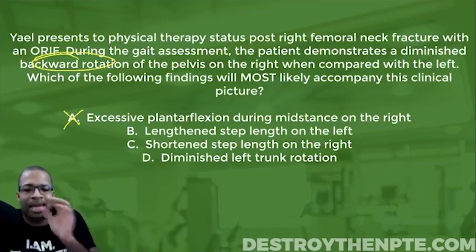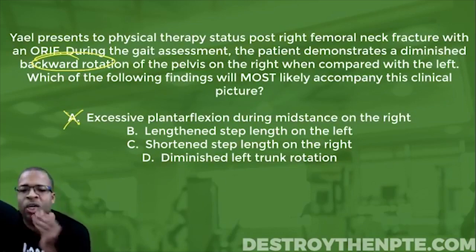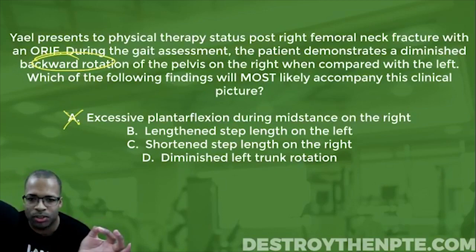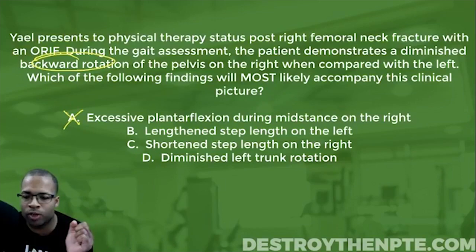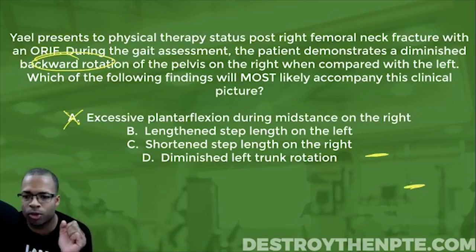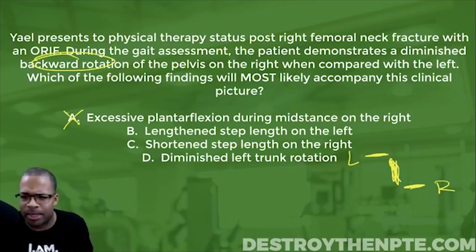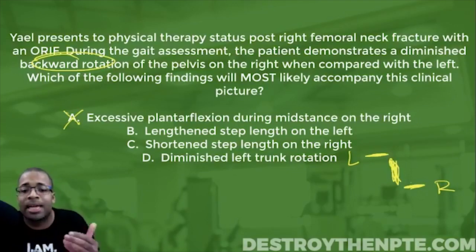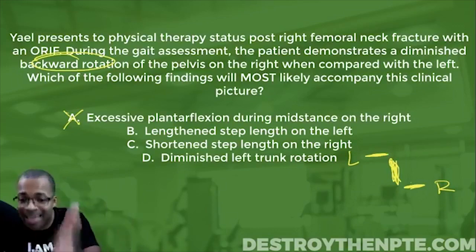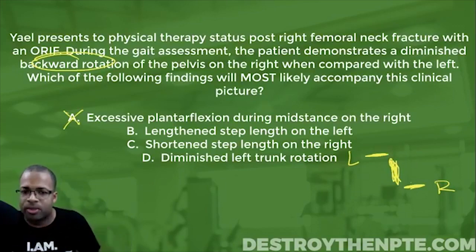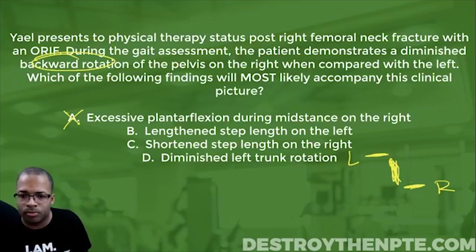Answer B says lengthened step length on the left. First we have to understand what step length is. Step length is measured from heel strike to heel strike of the lower extremities — the distance between right heel strike and left heel strike. Step length is named by the swing leg, the leg that is coming out. So the distance from right heel strike to left heel strike would be called the left step length.